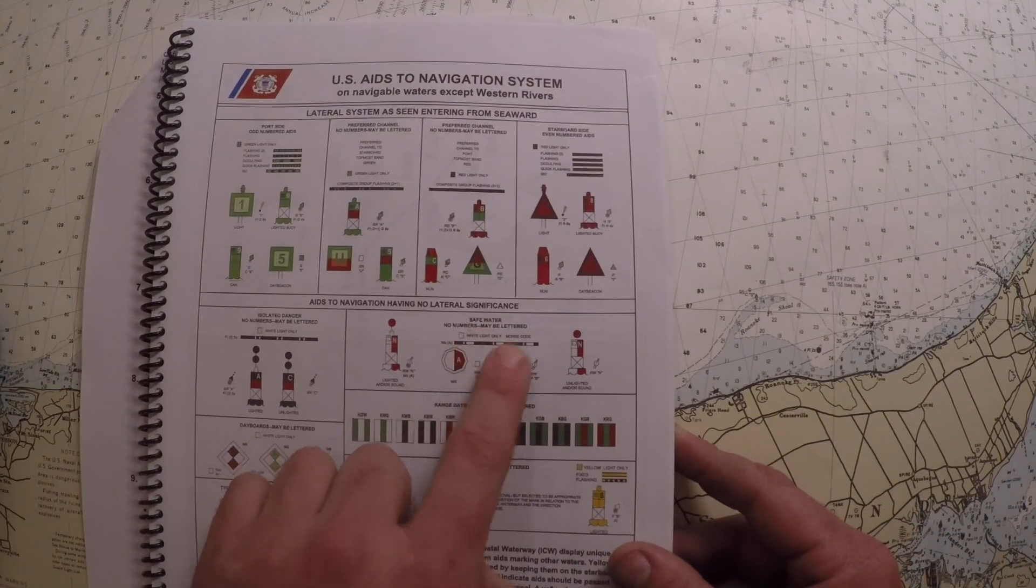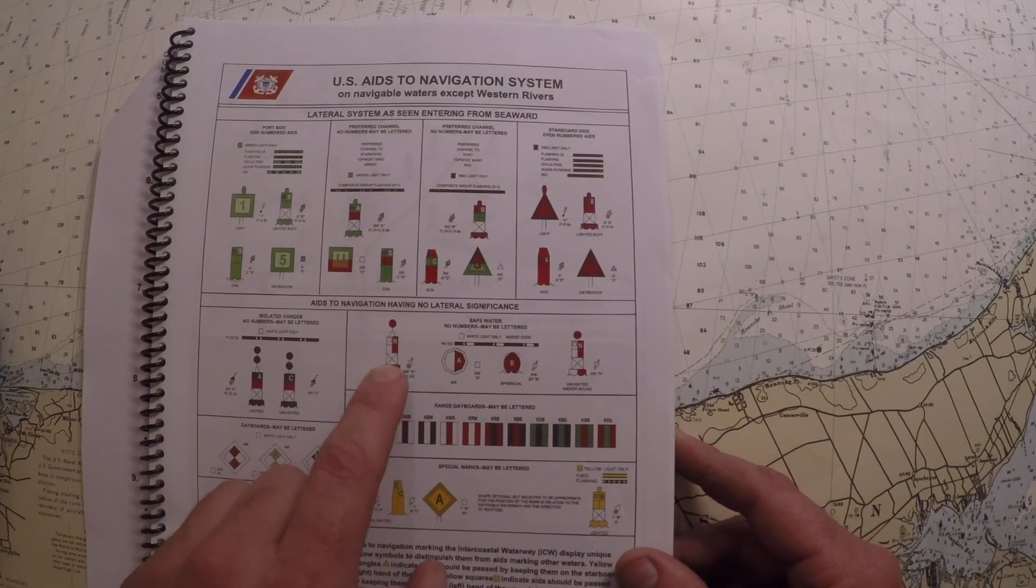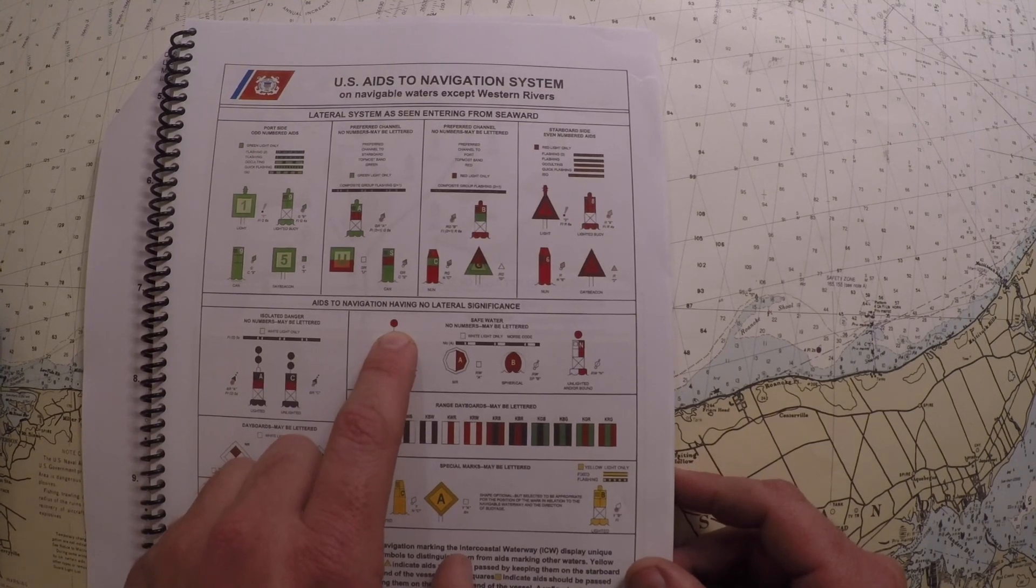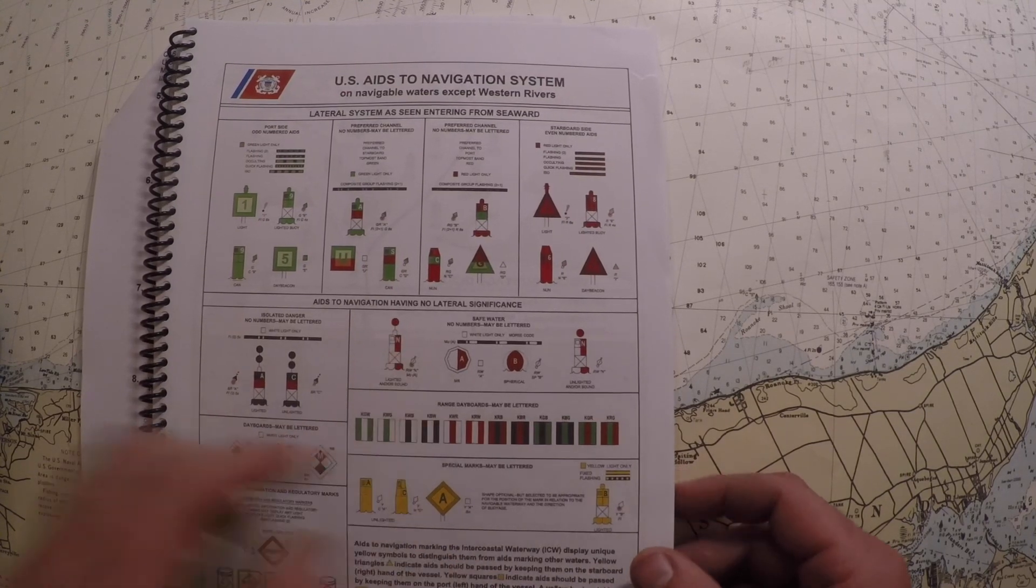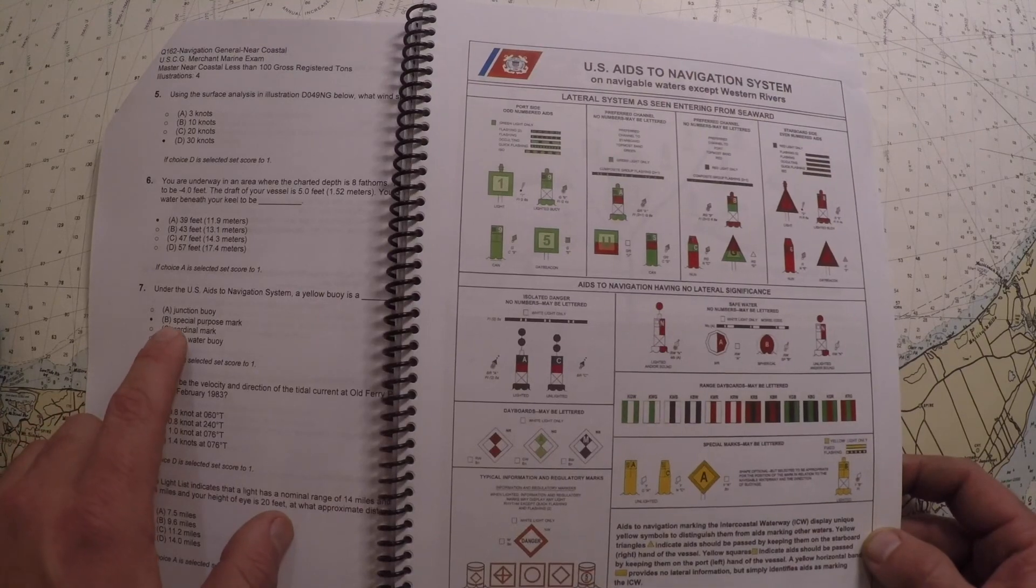This one right here. The safe water, it's also known as the Morse Alpha, the sea buoy. These are vertically striped with spherical top marks, red and white buoys. So you can kind of see that leaves us with B, our special purpose mark right there.